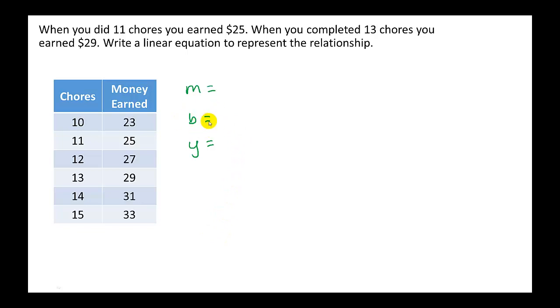So b would be really easy if when we looked at x on the table we would see a 0. We could take the y value and that would be b. I don't see any 0 on our chores which is x, which means b is not going to be just given to us.